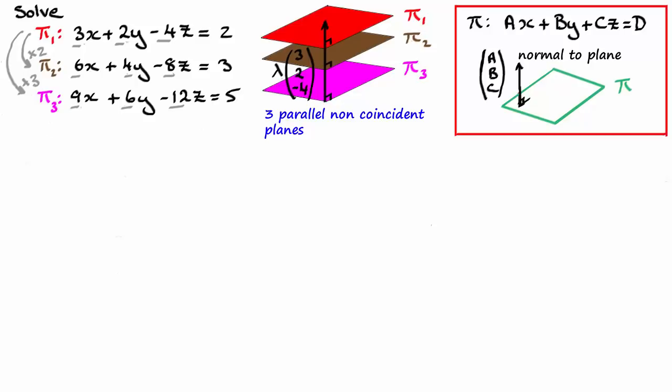And if we were looking for finding a solution to these three equations, a point or set of points that lie on all three planes, well, clearly, there's not going to be a solution. We say that this system of equations is inconsistent. There is no solution. So hopefully you can see that just by looking at these equations and looking to see if there's any multiples of the coefficients a, b, and c, then this would save us an awful lot of time in trying to use substitution methods to solve these equations.